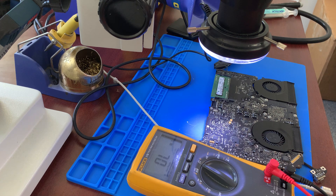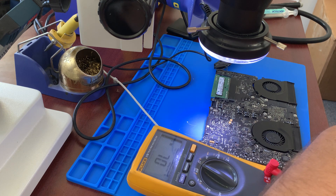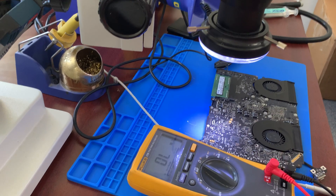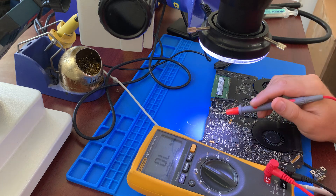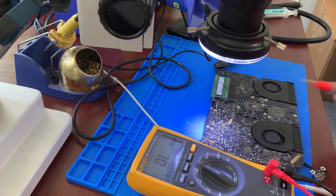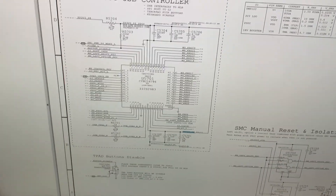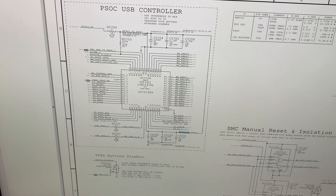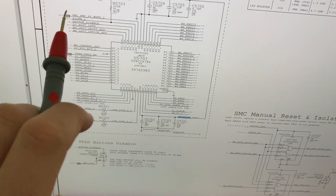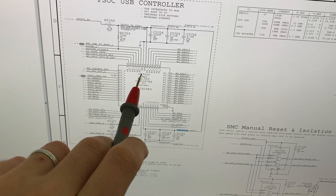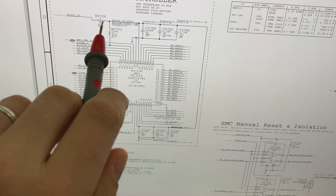Going through the schematics, we have this chip U5701 that basically controls the USB controller for the keyboard and trackpad. It's right here on the schematics. In order for it to function properly, the first thing we need is 3.3 volts on the S4 line — VDD — this is the voltage we have to be getting.